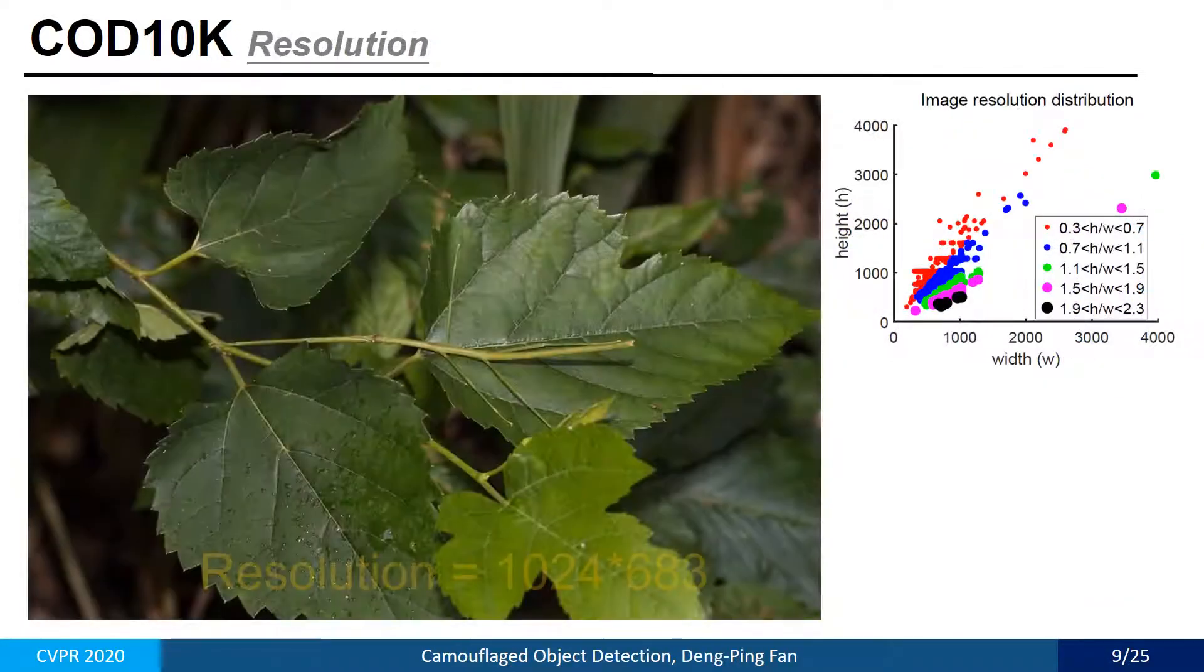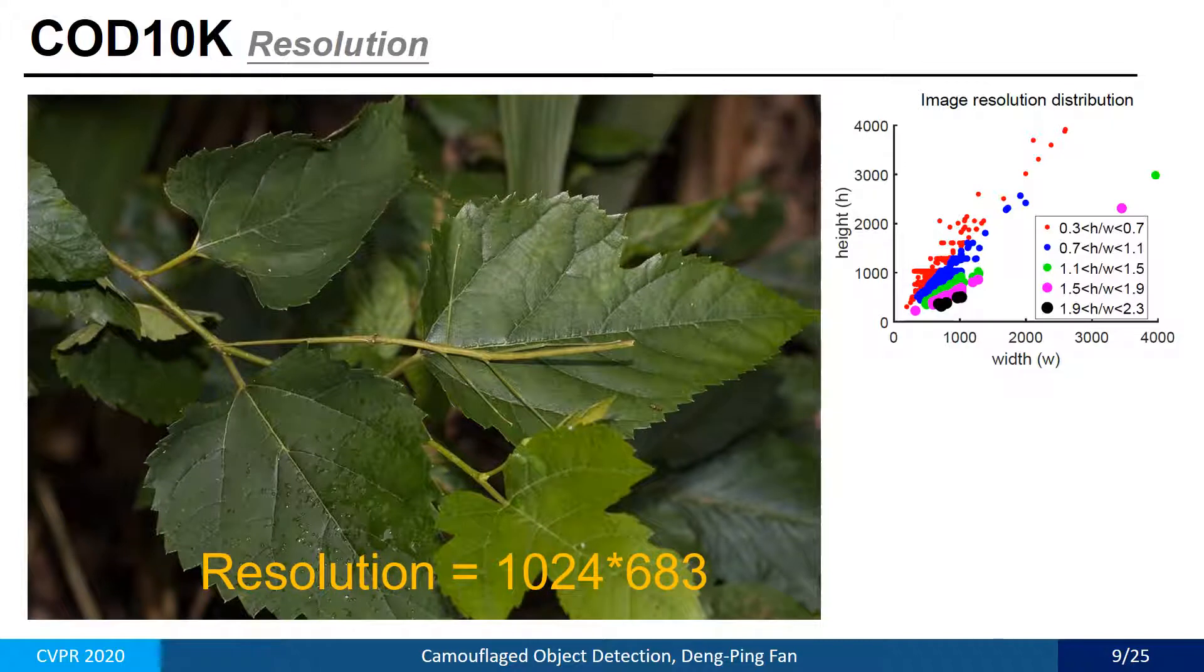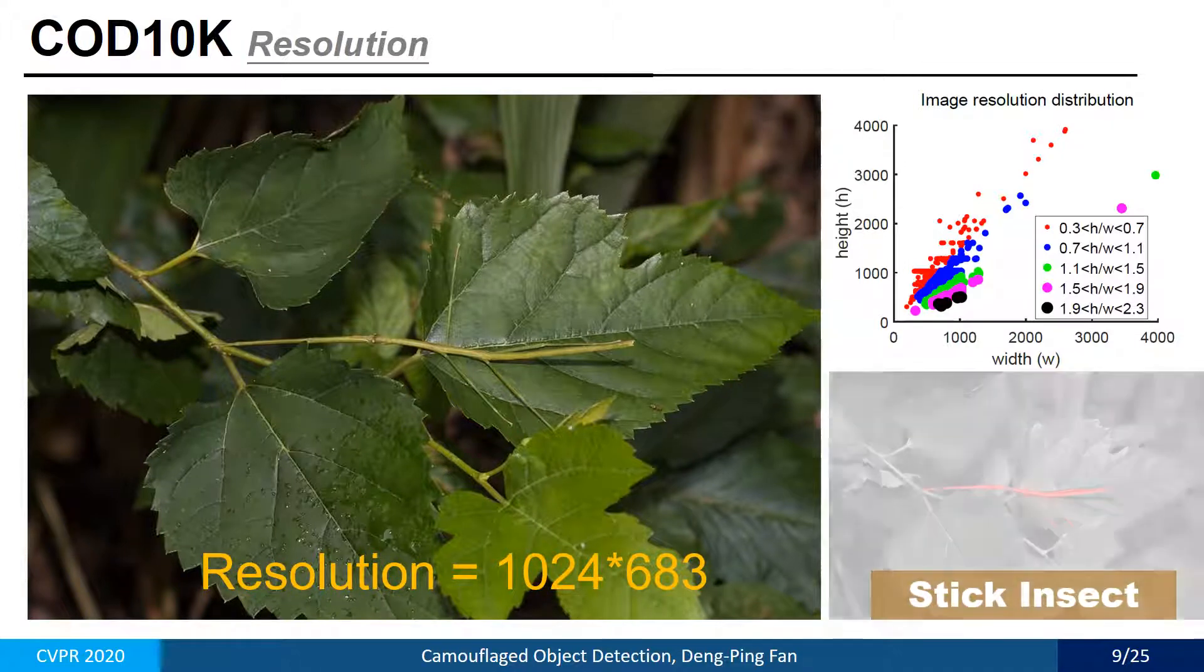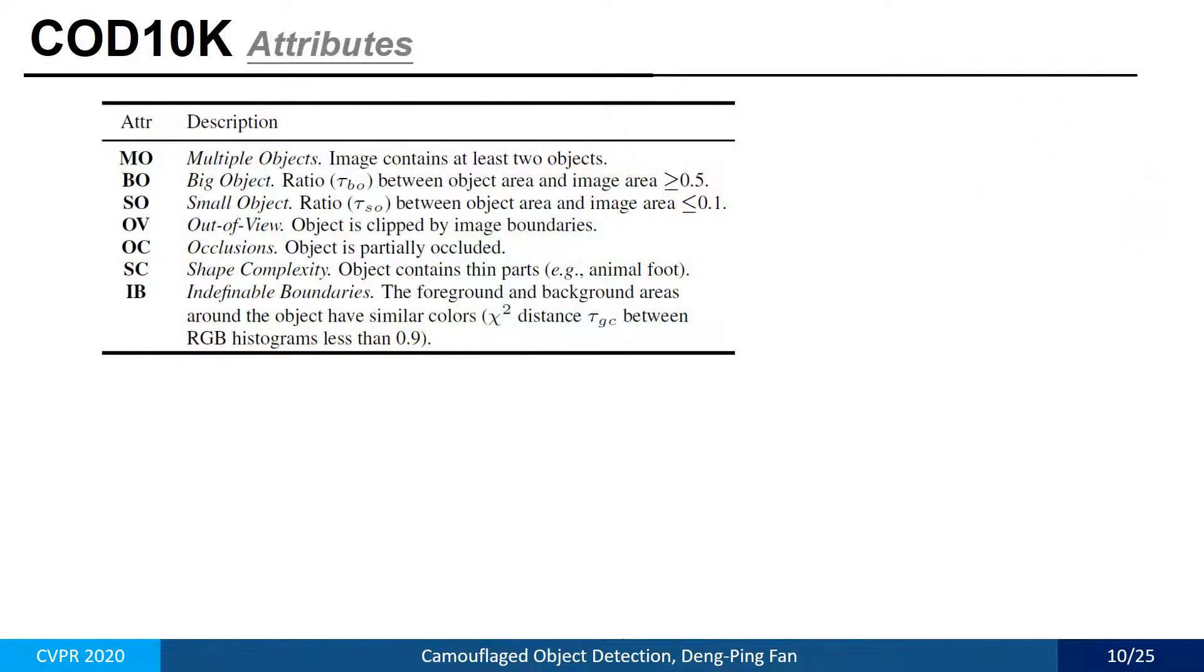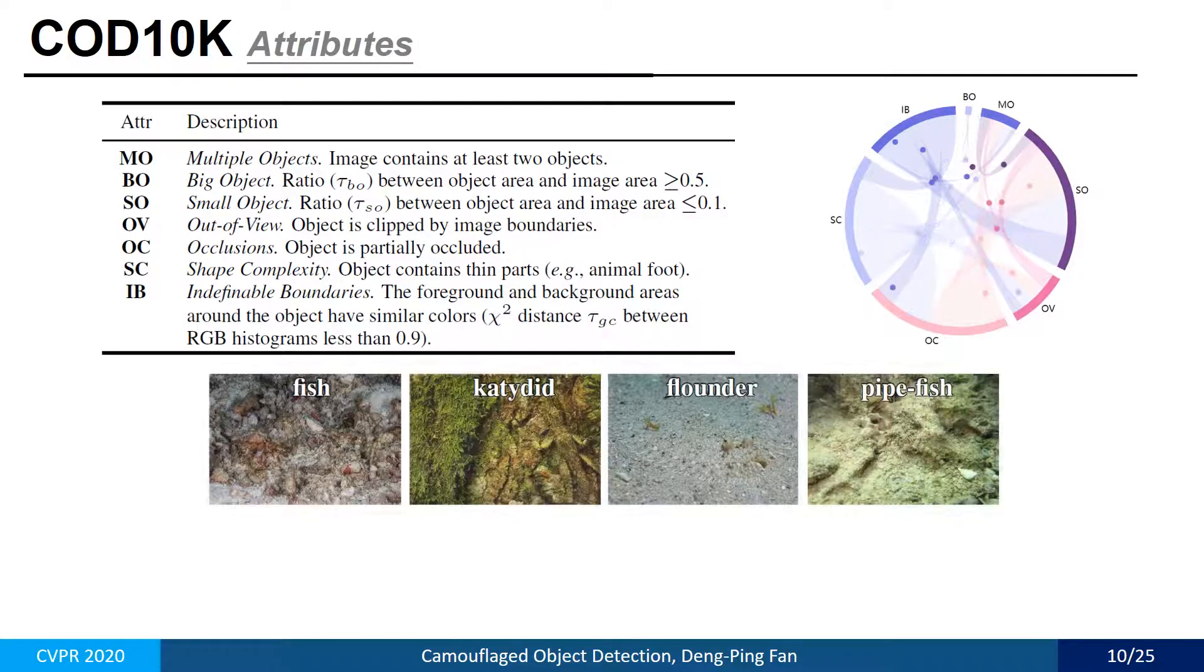We also collect many high-resolution images. We also provide several challenging attribute labels. This is the co-attributes distribution over the proposed COD dataset.